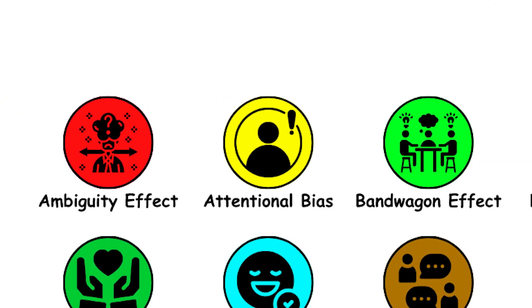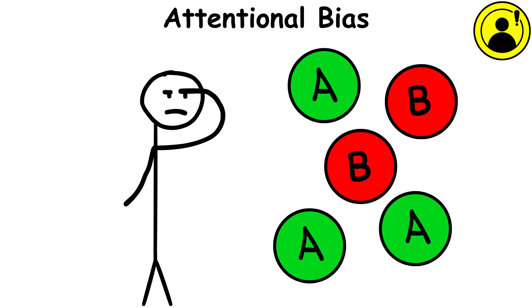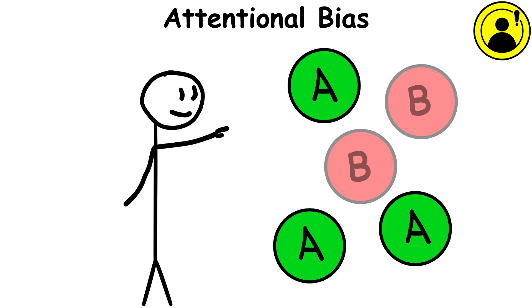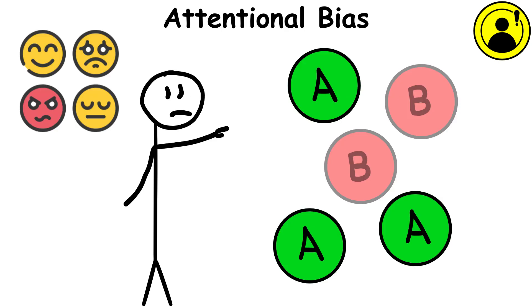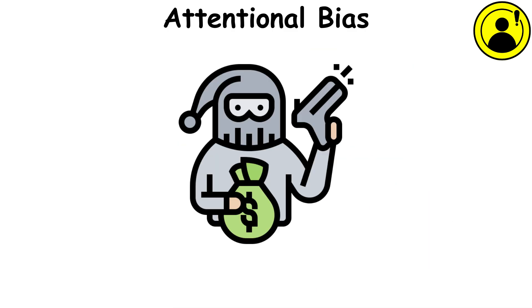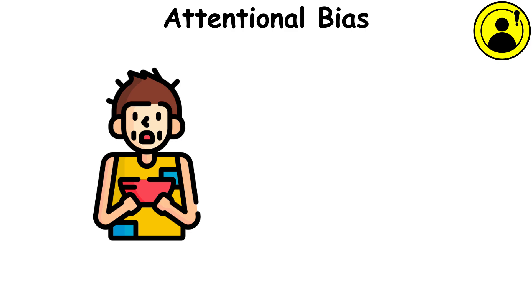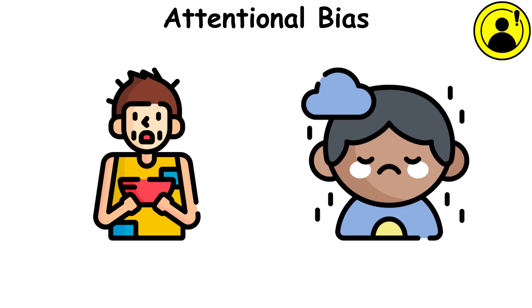Attentional bias. This describes our tendency to focus on certain elements while ignoring others. Research has shown that many different factors can bias our attention, from external events and stimuli, such as a perceived threat to our safety, to internal states, such as hunger or sadness.